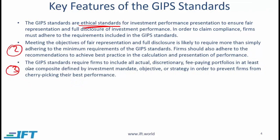Number three, the GIPS standards require firms to include all actual discretionary fee-paying portfolios in at least one composite defined by investment mandate, objective, or strategy, in order to prevent firms from cherry-picking their best performance. Every actual discretionary fee-paying portfolio needs to be in at least one composite, because performance numbers are reported on a composite basis. If a particular portfolio is not included in any composite, the returns associated with that portfolio will not be presented.